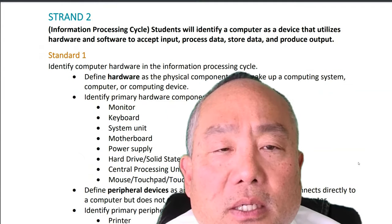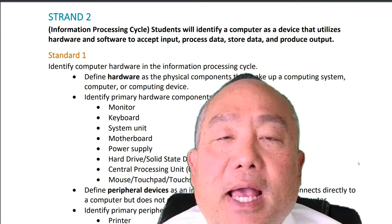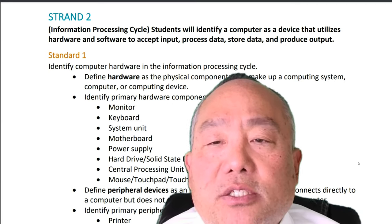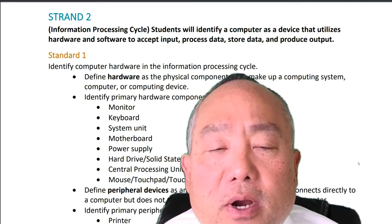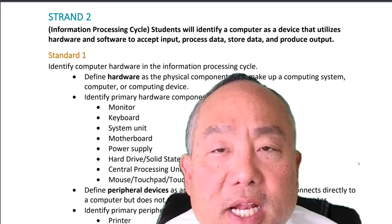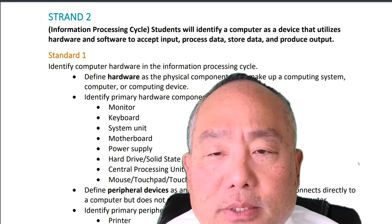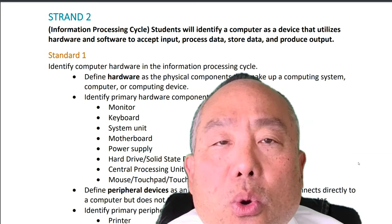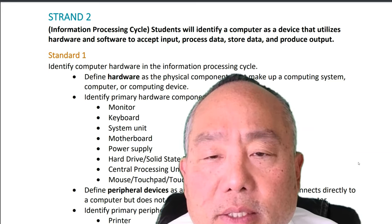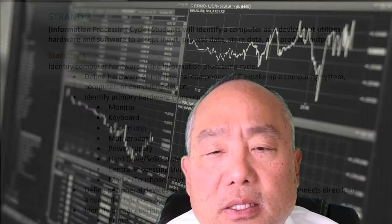Strand 2: Information processing cycle. Students will identify a computer as a device that utilizes hardware and software to accept input, process data, store data, and produce output. Standard 1: Identify computer hardware in the information processing cycle.